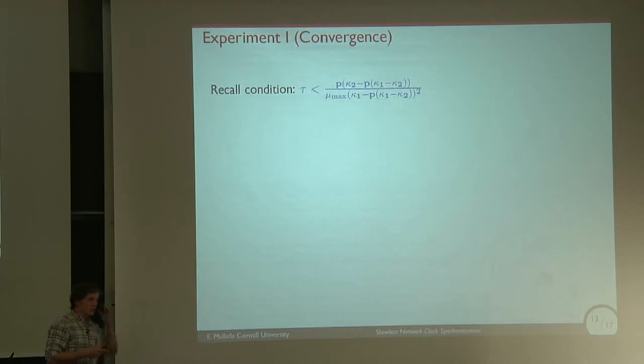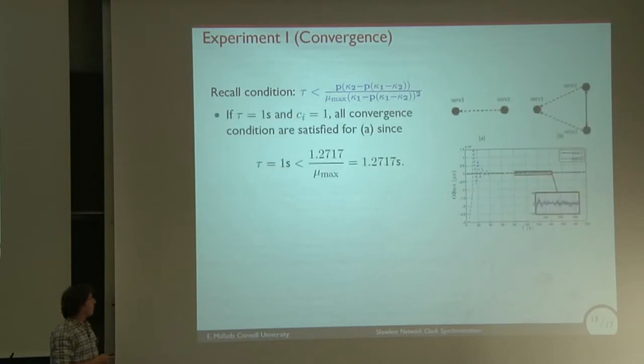We first test convergence. If you recall this condition that we had before, this bound on τ. For the parameter value that I mentioned before, if you have τ equal to one second, the condition is satisfied. We see that for the offset of the client, it gets very close to zero. So it synchronizes with the leader, which is nice.